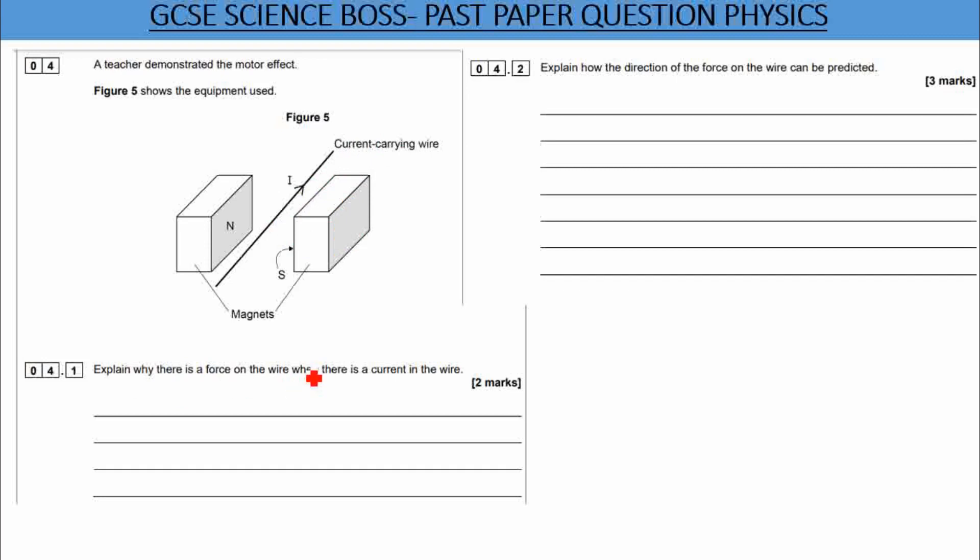Explain why there is a force on the wire when there is a current in the motor. So firstly, you must mention that there is a magnetic field due to the magnet. So there is a permanent magnetic field due to the magnets. That's your first marking point.